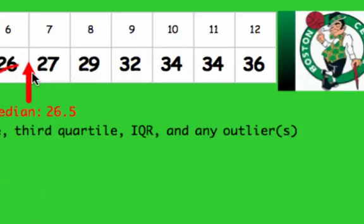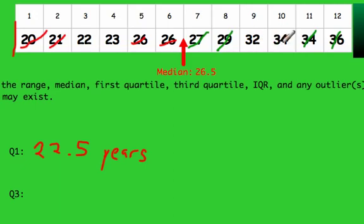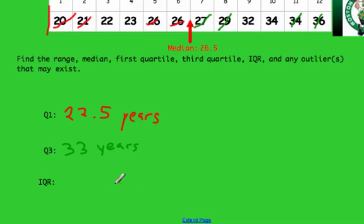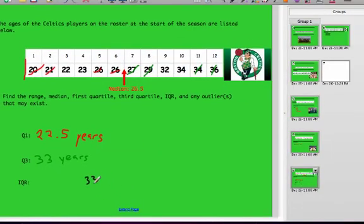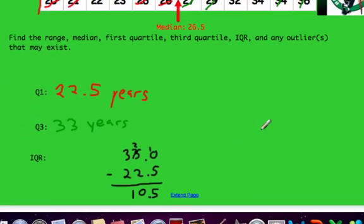We do the same thing to get the third quartile, looking at data values 7 through 12 — everything to the right of the median. There are two numbers in the middle of that group, and the middle of 32 and 34 is 33 years, so Q3 = 33. The last step is the interquartile range, which is Q3 minus Q1: 33 minus 22.5. Lining up the decimals — 33.0 minus 22.5 — gives us an IQR of 10.5 years.